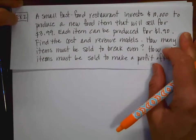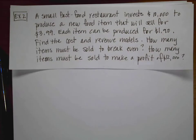Second example, similar situation. A small fast food company is going to invest $10,000 to produce a new food item that will sell for $3.99. Each item can be produced for $1.90. Find the cost and revenue model. How many items must be sold to break even? This one says, how many items must be sold to make a profit of $12,000?